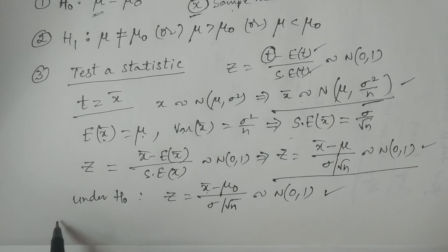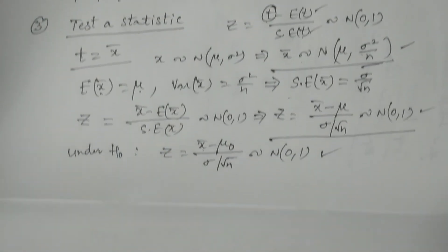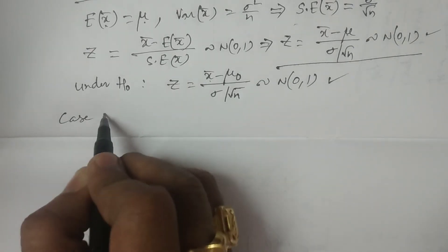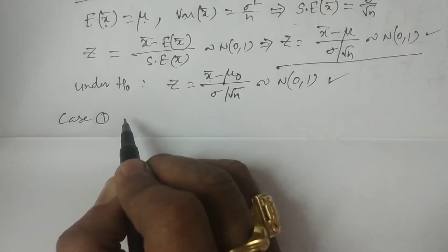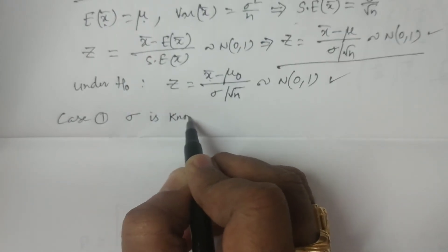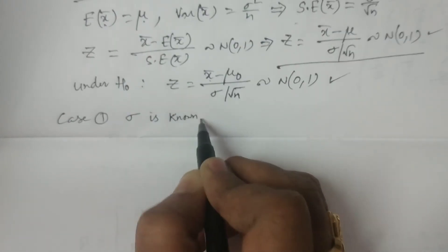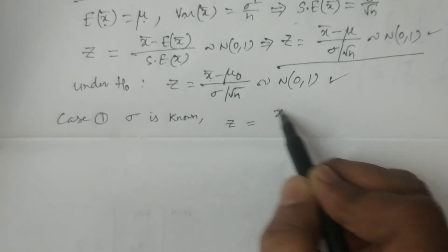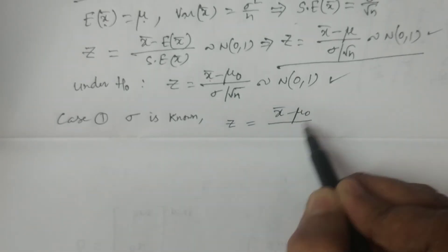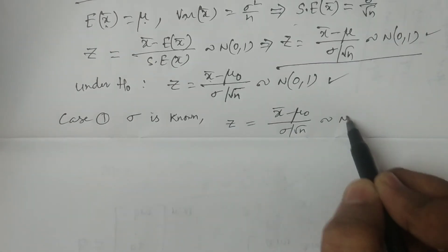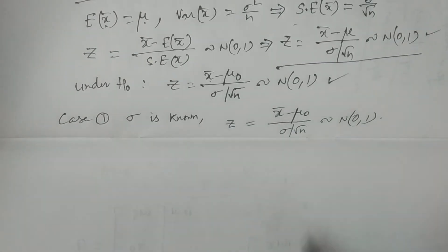But here we have two cases — Case 1 and Case 2. In Case 1, sigma is known. When sigma is known, we use z equals x̄ minus mu naught divided by sigma by root n, which follows N(0,1). The same test statistic is considered.